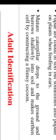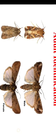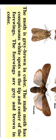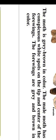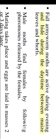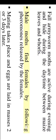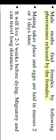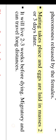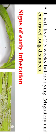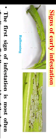Adult identification: the moth is gray-brown in color. The male moth has conspicuous white spots on the tip and center of the forewings, which are gray and brown. Fall armyworm moths are active during evening and hide during daytime between maize leaves and whorls. Male moths find females by following pheromones released by females. Mating takes place and eggs are laid in masses two to three days later. Adults live two to three weeks and are migratory, capable of travelling long distances.